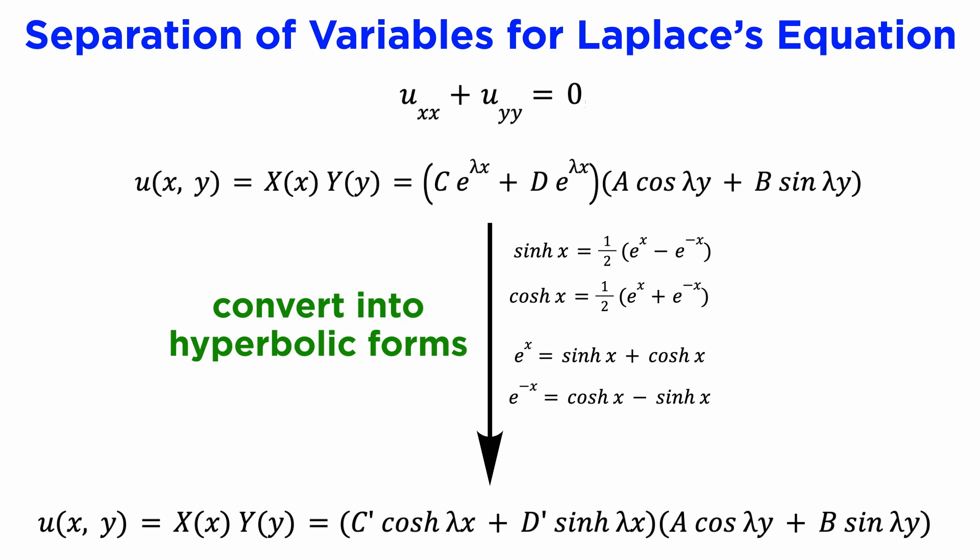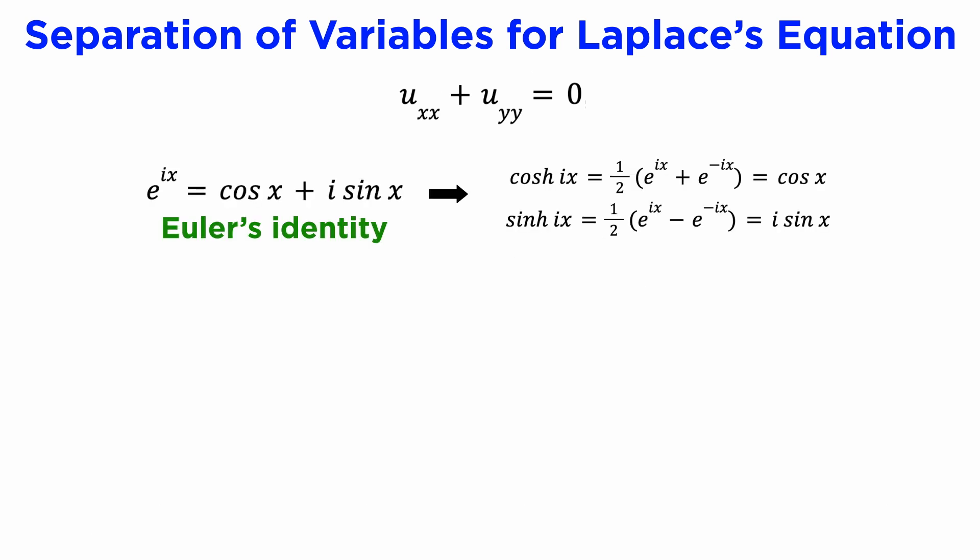The reason we prefer using the hyperbolic functions at this stage is that there are some complex number identities that we can exploit to better visualize our solutions. From Euler's identity, we can show that cosh of ix equals cosine of x and sinh of ix equals i sine of x.